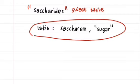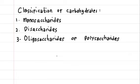Carbohydrates are classified as monosaccharides, disaccharides, oligosaccharides, or polysaccharides depending on the number of simple sugars they contain.